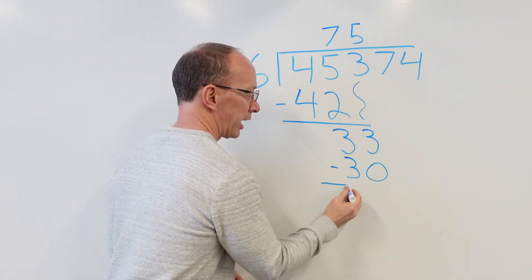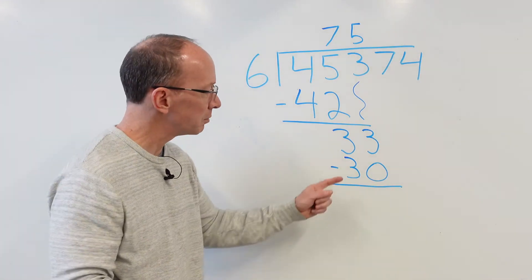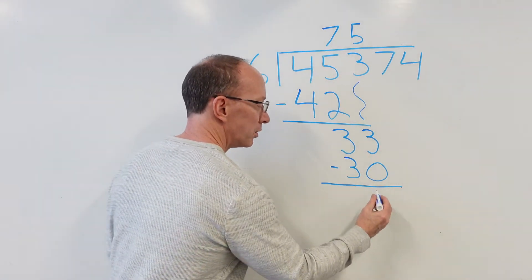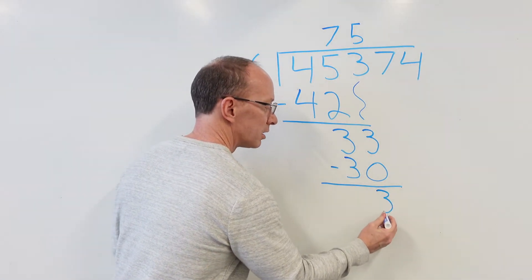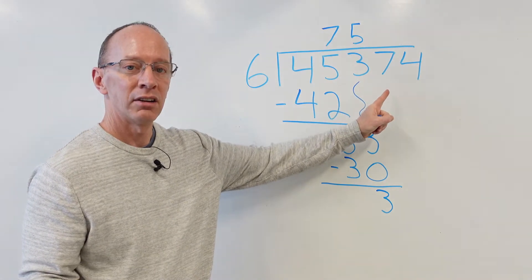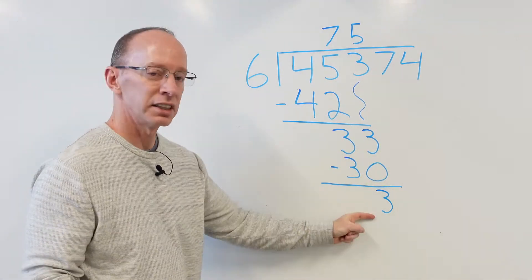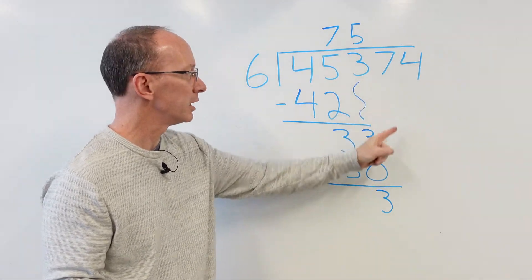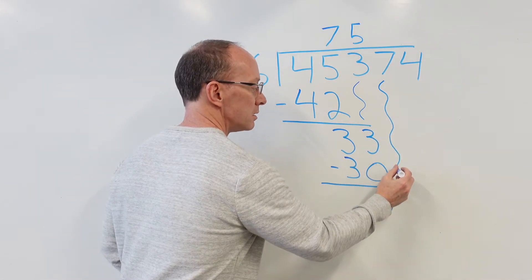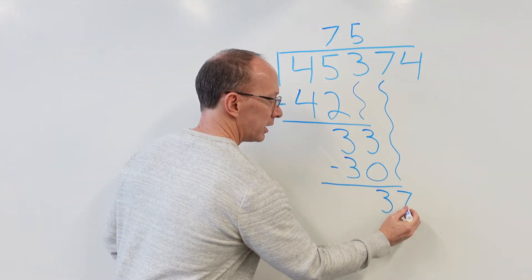5 times 6 equals 30. Now you do subtraction. Same thing: 3 minus 0 is 3. Bring down the next number. Because you can't put 6 into 3, bring it down. Bring that 7 right down there.